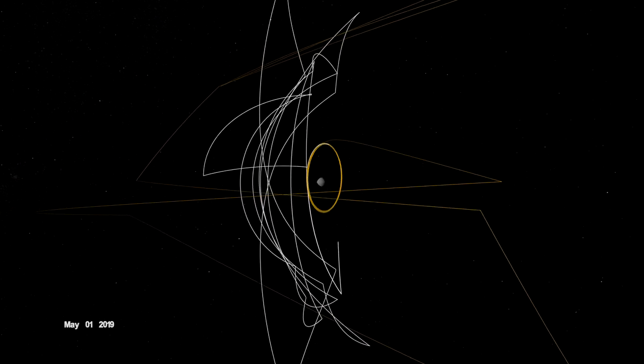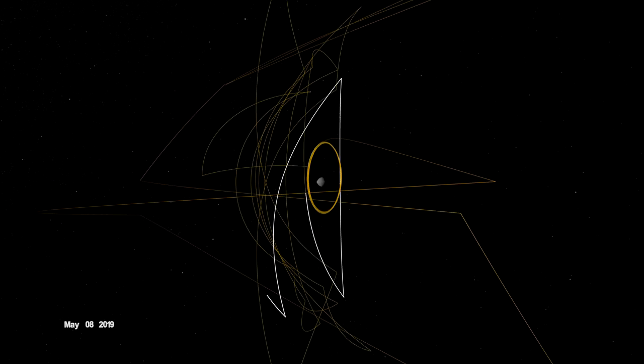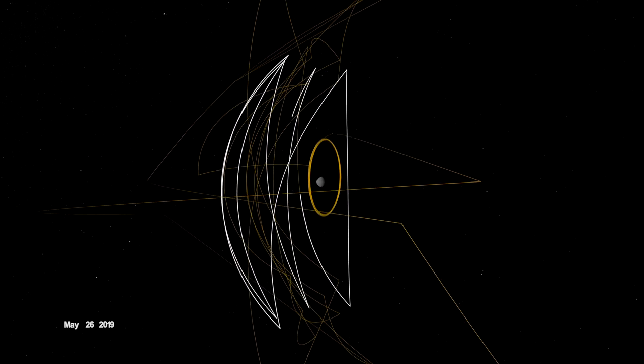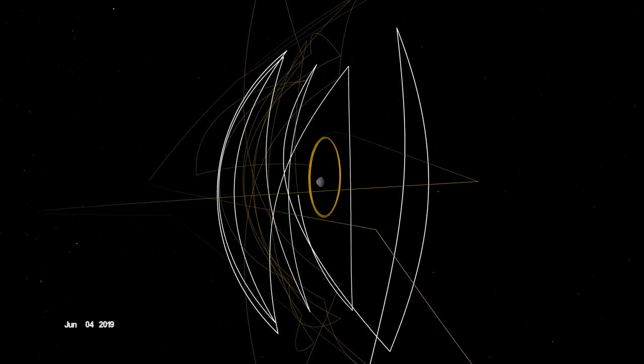During the detailed survey, OSIRIS-REx globally mapped Bennu at only 5 centimeters per pixel, the highest resolution of any planetary body, including Earth.